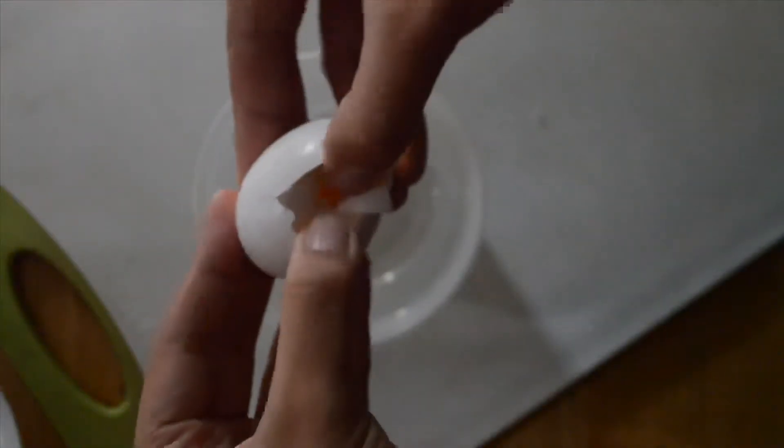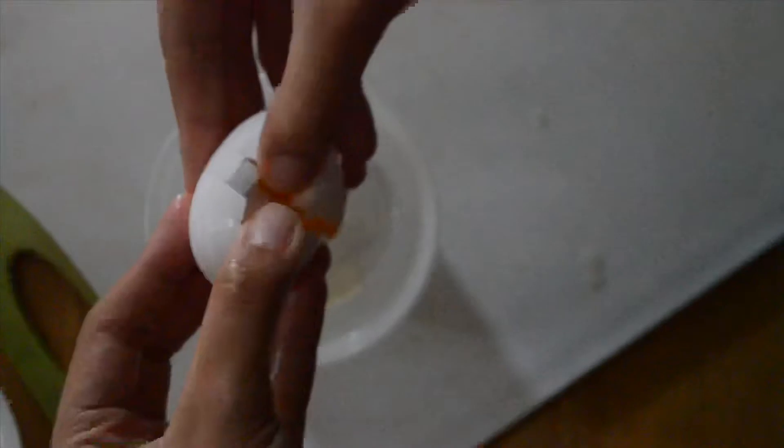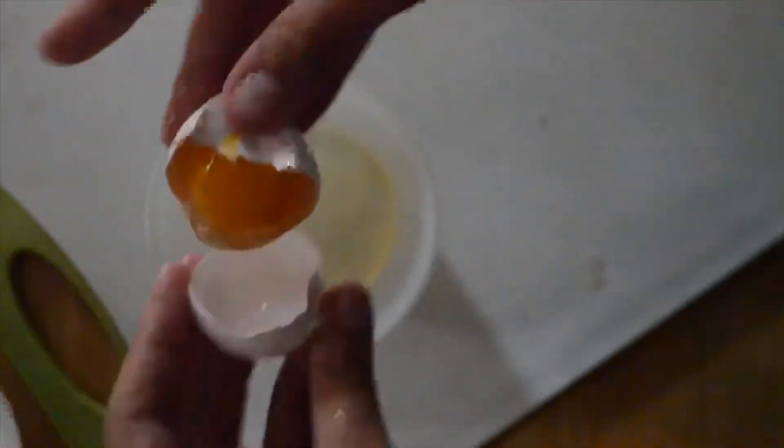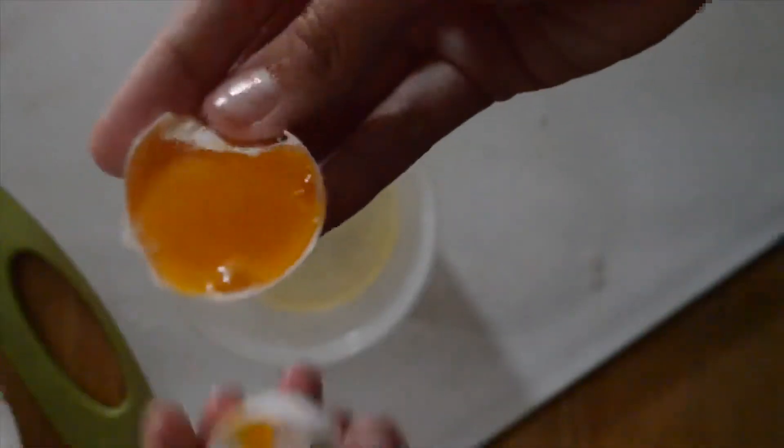Now the first hack that I have for you is when a recipe calls for egg white only or a yolk only. Well, don't do what I just did, but you can separate it this way so you don't have to use any tools or anything fancy. You have either the yolk or the egg white.